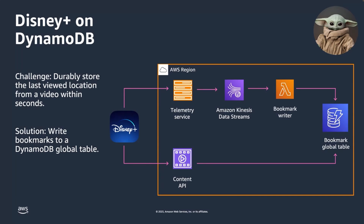As you're watching the movie, every few seconds the client sends a request through their telemetry service. That flows through Kinesis Data Streams, and then a Lambda function pulls data off the stream and updates your bookmark in the DynamoDB table. Because the writes are so heavy — they have millions of clients sending bookmark data all the time — they need this more complex infrastructure of the telemetry service and Kinesis Data Streams for handling the writes to the service.